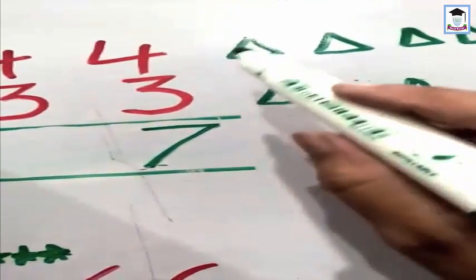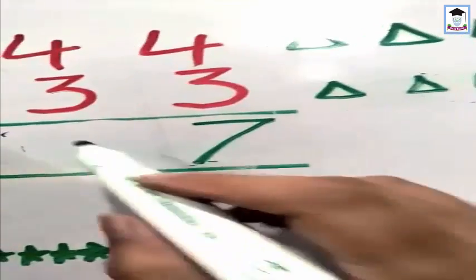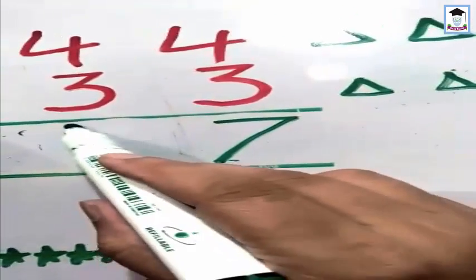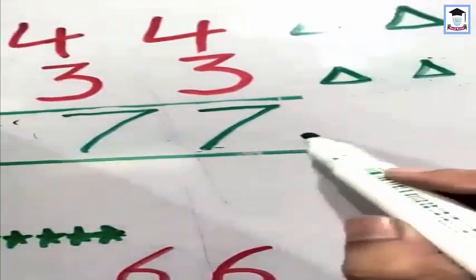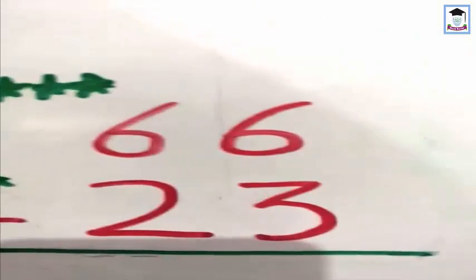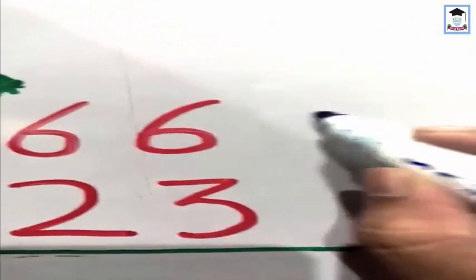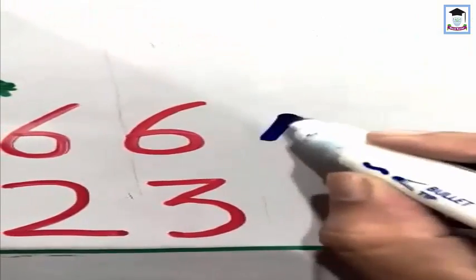The same procedure applies to the tens place: four and three. One, two, three, four, and one, two, three — count them: one, two, three, four, five, six, seven. How many? Seven. So four plus three makes seven. Therefore 44 plus 33 makes 77.